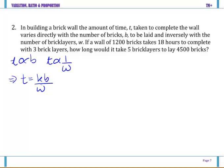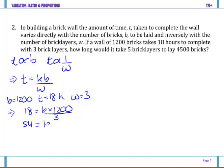Now it says a wall of 1200 bricks, so b equals 1200, takes 18 hours to complete with 3 brick layers, so w equals 3. So from there I have 18 equals k times 1200 all over 3. Times both sides by 3, I get 18 times 3 is 54 equals 1200k. Divide both sides by that 1200 and you get 0.045. So that means t equals 0.045 b all over w. That's my relationship.